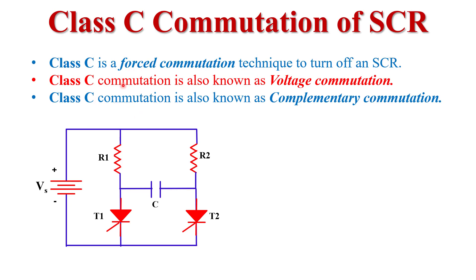In the case of forced commutation, we turn off the SCR forcefully with the help of external circuitry. Here we use the Class C commutation circuit to turn off the SCR, that is why it is called the Class C force commutation technique. Class C commutation is also known as voltage commutation, because in this technique we apply a reverse bias voltage across the thyristor and the thyristor gets turned off.